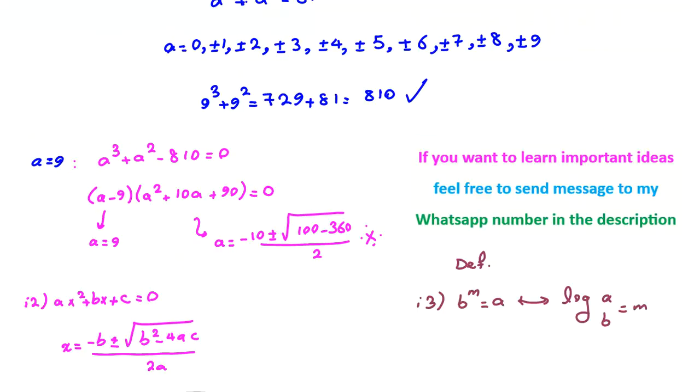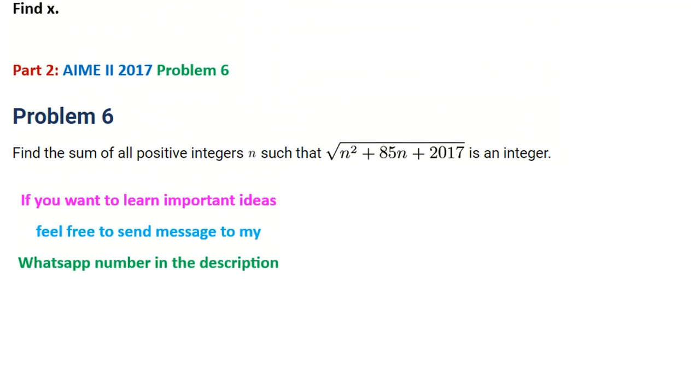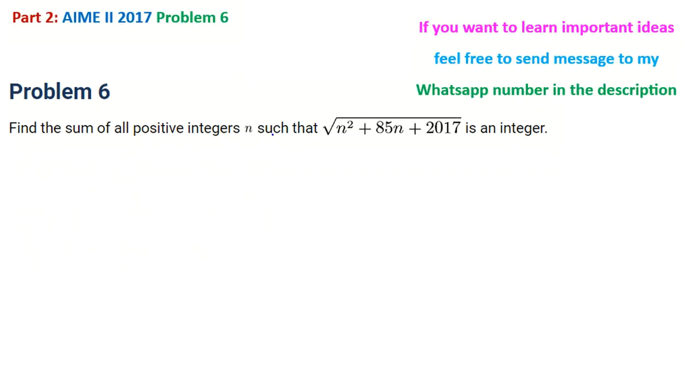Now let's try to solve next problem. It says find the sum of all positive integers n such that square root of n squared plus 85n plus 2017 is an integer. So when this square root is an integer, then n squared plus 85n plus 2017 equals m squared if we raise both sides to the power of 2.